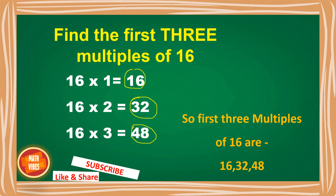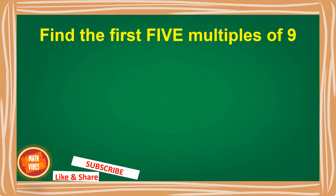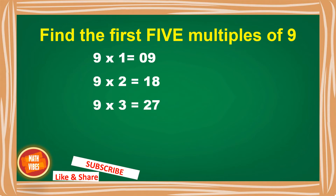Now suppose in the next question you have to find the first 5 multiples of 9. Now you want to find 5 multiples, so write down the table of 9: 9 ones are 9, 9 twos are 18, 9 threes are 27, 9 fours are 36, and 9 fives are 45. We wanted to find only 5 multiples of 9, so we have written the numbers up to 5 only.